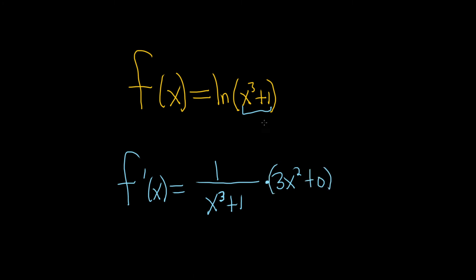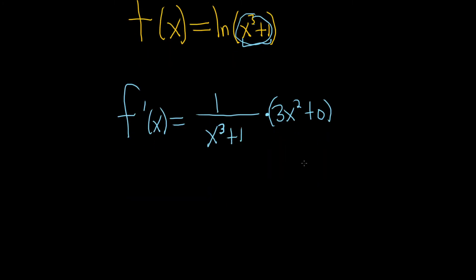Whenever you have a natural log with some stuff inside it, it's just 1 over whatever is there, times the derivative of the inside function. So this is equal to 3x squared over x cubed plus 1.